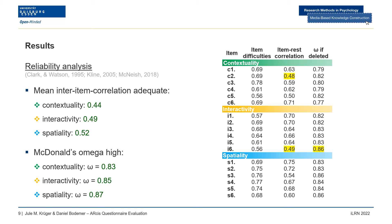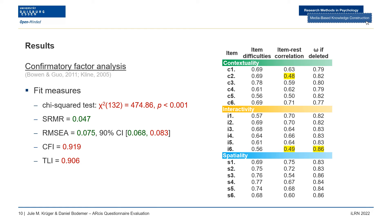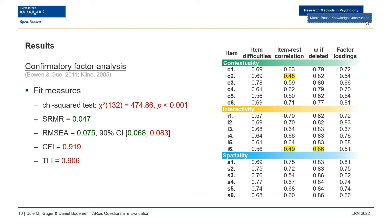Omega could not be increased by deleting items in the contextuality and spatiality subscales, and only the removal of one item in the interactivity subscale would slightly increase it. The fit measures for the confirmatory factor analysis provided a more mixed picture. The chi-squared test for fit of the model was significant, rejecting the hypothesis that estimated and observed covariances are the same. SRMR indicates a good fit with a score below 0.1. RMSEA was in the reasonable approximated fit range between 0.05 and 0.08. Neither CFI nor TLI were above the suggested 0.95, not indicating a good fit. All factor loadings are above the suggested value of 0.4, and all between 0.5 and 0.85.